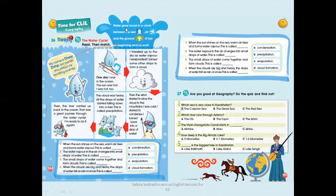Water goes round in a circle between the sea, air, and the ground. It has no beginning and no end. It is called the water cycle. My name is Drew Drop — let me tell you about my amazing journey. One day I was in the ocean. The sun was hot, I was hot too. I traveled up to the sky as water vapor — I evaporated. I joined some other drops to form a cloud.